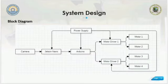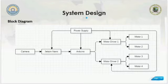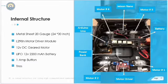In the system design, we have a block diagram. The camera sends input images in real time to the Jetson Nano. The Jetson Nano then performs all processing on the input data and sends instructions to the Arduino. On the basis of instructions received, the Arduino guides the motor drivers that are controlling the car's movement.